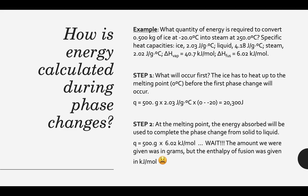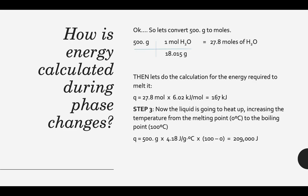We've heated it to the melting point. Now at the melting point, all that energy goes into changing the phase from solid to liquid — so we use the phase change equation q = m × enthalpy of fusion. But the enthalpy of fusion is in kJ/mol, so we convert 500 grams to moles: that's 27.8 moles of water. Multiplying 27.8 moles by 6.02 kJ/mol gives 167 kilojoules — that's the amount of energy it takes to melt this substance.